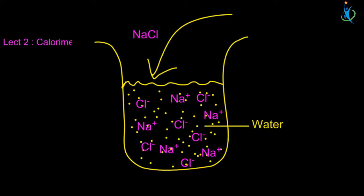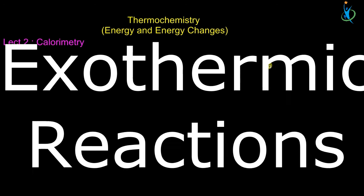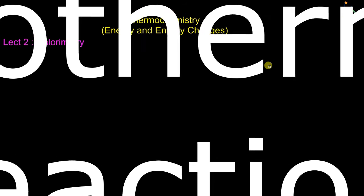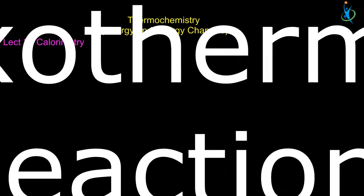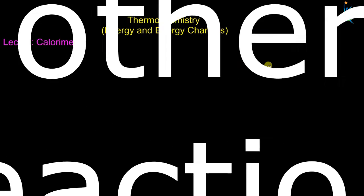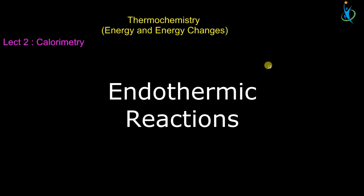We looked at types of chemical reactions in terms of energy changes, which we call thermochemical reactions. We divided them into two: exothermic reactions, where 'exo' means outside — reactions that liberate heat to the surroundings — and endothermic reactions, where 'endo' means inside, so the reaction absorbs or takes up energy into the system.